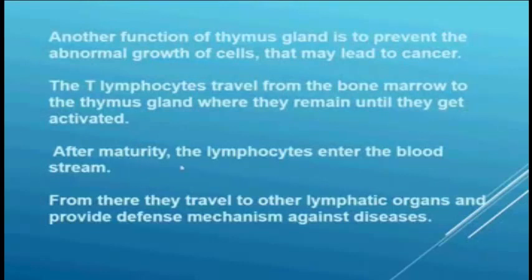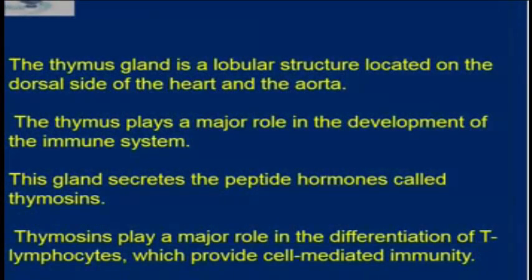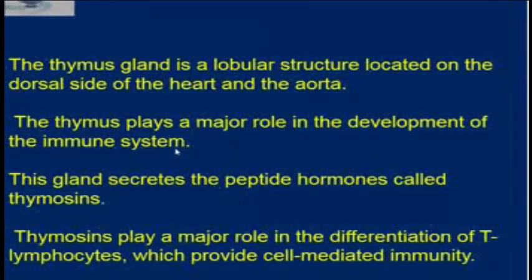After maturity, the lymphocytes enter the bloodstream and travel to other lymphatic organs where they provide a defense mechanism against infections or diseases. The thymus gland is a lobular structure — elongated, bilobed — meaning it has two lobules, which are located on the dorsal side of the heart. The thymus plays a major role in the development of the immune system.